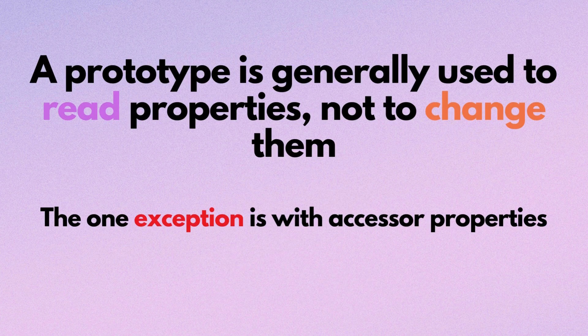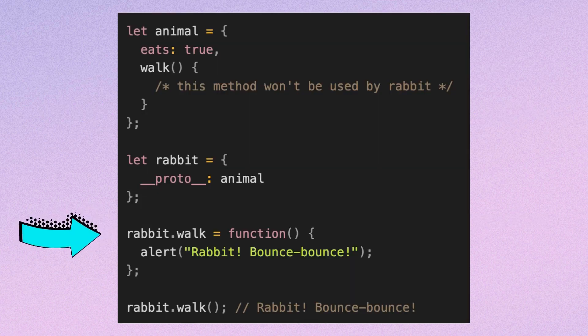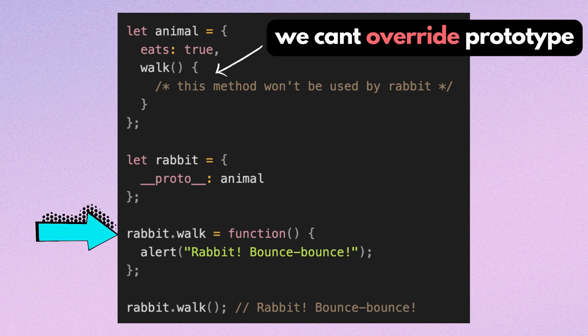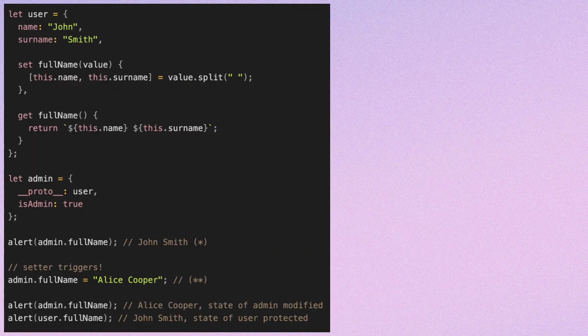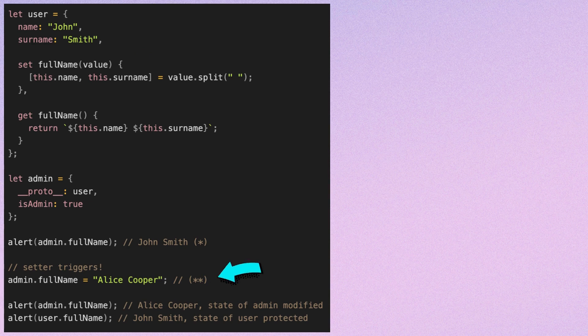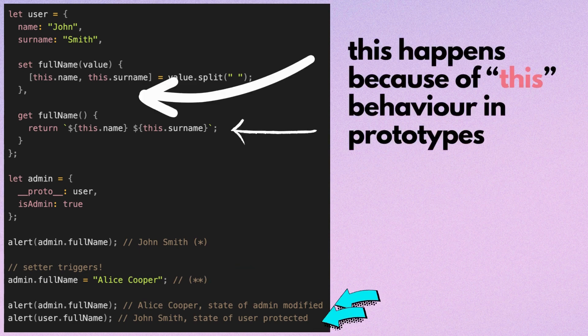A prototype is generally used to read properties, not to change them. The one exception is with accessor properties. In the example, we assign its own walk method to rabbit and can override the prototype by reassigning the walk method of rabbit. Let's consider the exception with accessor properties. The property admin.fullName has a getter in the prototype user, so it is called, and calling a setter in the prototype is not actually overriding — it's more like calling a method. The original user object's properties will remain the same because of how this behaves in prototypes.